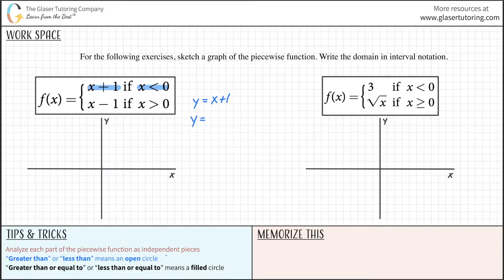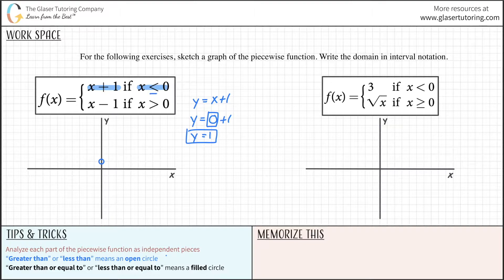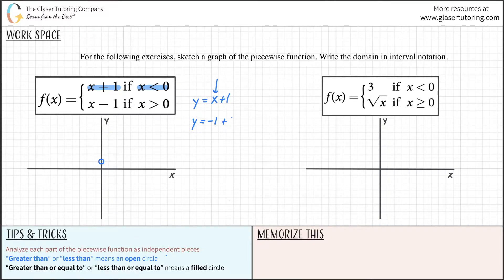So y equals 0 plus 1, meaning y is 1 when x is 0. We go to our coordinate system, locate x equals 0, go up one spot to y equals 1, and draw an open circle — because it's not equal to. Then plug in x equals negative 1: y equals negative 1 plus 1, so y is 0. When x is negative 1, y is 0, which lands on the x-axis. That point is filled in.